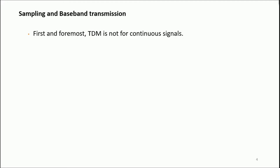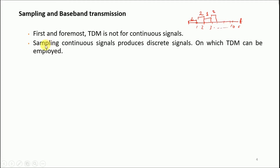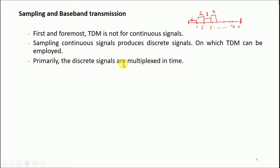Time division multiplexing is not suited for continuous signals. Since we have a given frame in time that we segment — say 10 seconds divided into one-second slots — each slot is allocated to a given message alternately. We cannot rely on continuous signals, so we must move to sampling. Sampling continuous signals produces discrete signals, and once we have discrete signals we can employ TDM. Primarily, discrete signals are multiplexed in time.